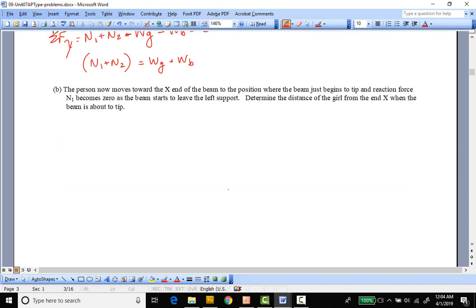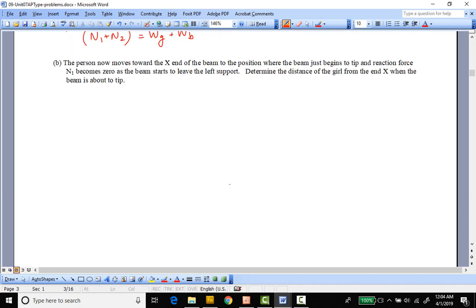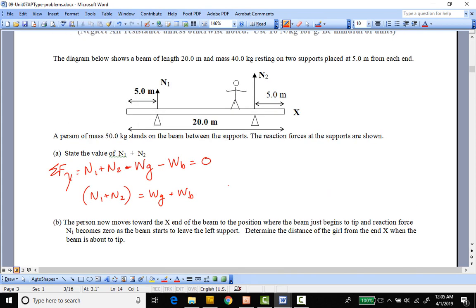Now part two, part B it says, the person moves towards the X end of the beam, the position where the beam just begins to tip in the reaction force, and when it becomes zero as the beam starts to leave the left supports. Now they're giving us a little tip, I mean I usually wouldn't give you these many tips in class, but if you think about it, if these beams are not connected at N1 and N2, they're free to move around.